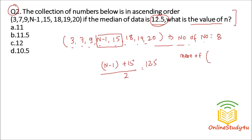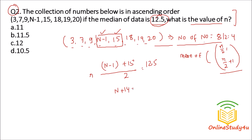Since n is even, take the n/2-th and (n/2 + 1)-th terms: that is the 4th and 5th terms. We already know n-1 + 15 = 25 (since 2 × 12.5 = 25). So n - 1 + 15 = 25, meaning n - 1 = 14, wait — 25 minus 14 gives n = 11. So the value of n is 11, which is option A.